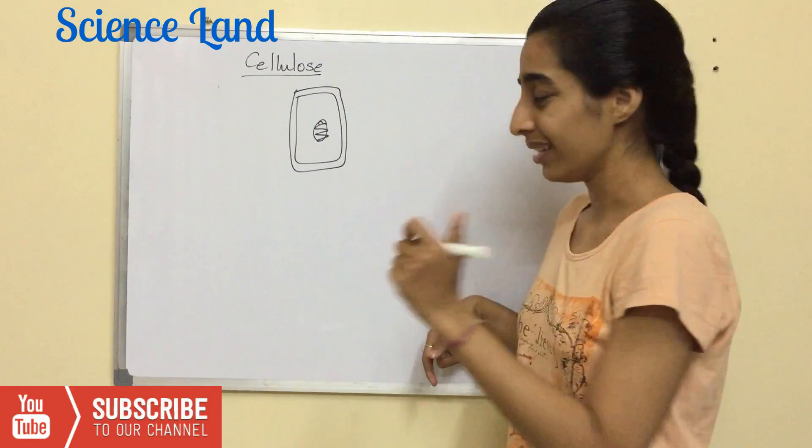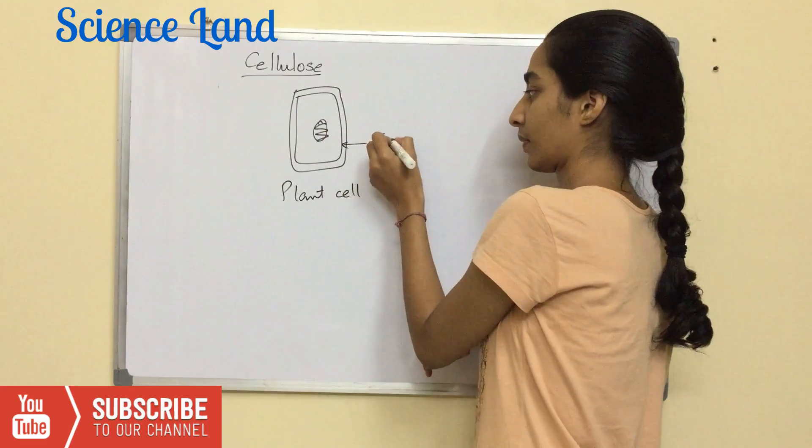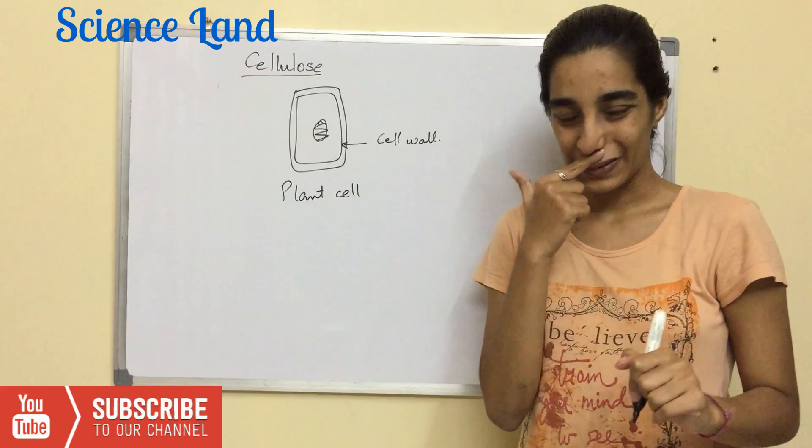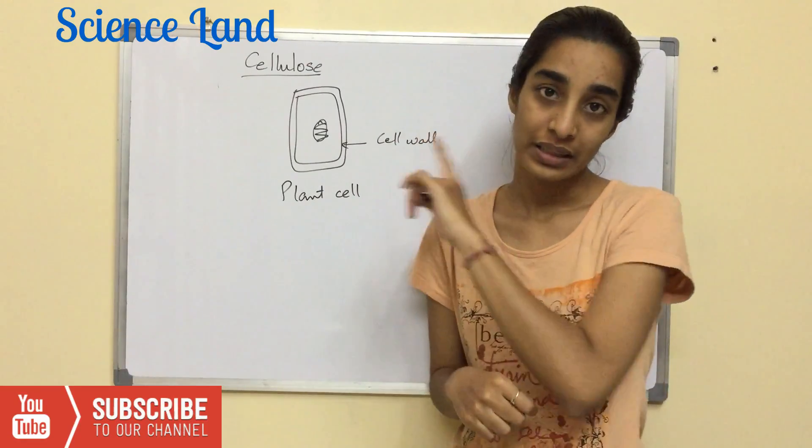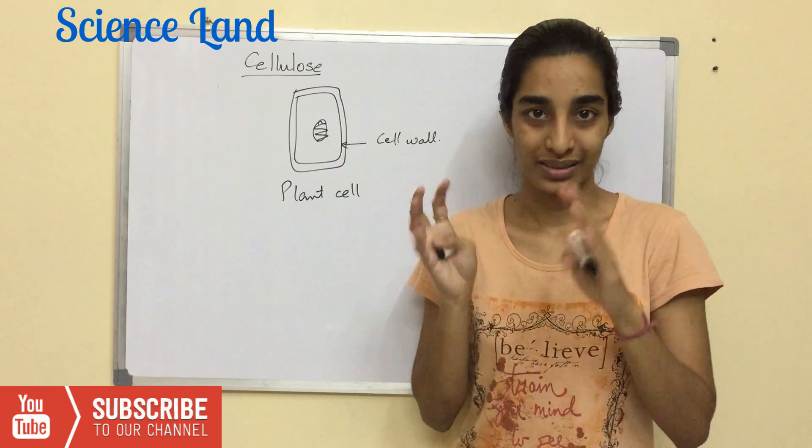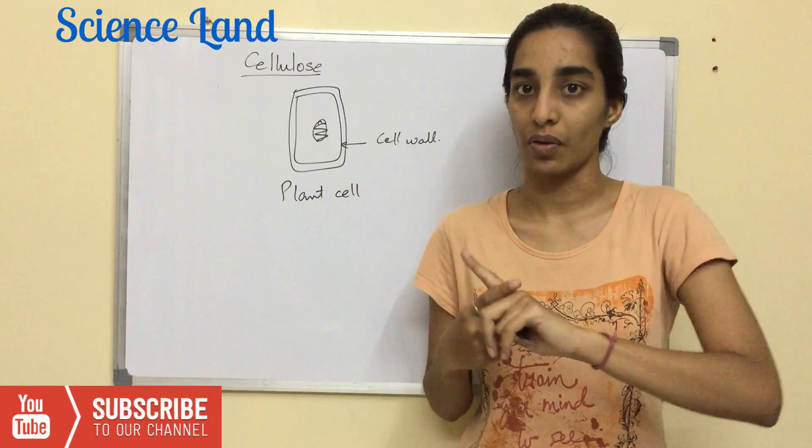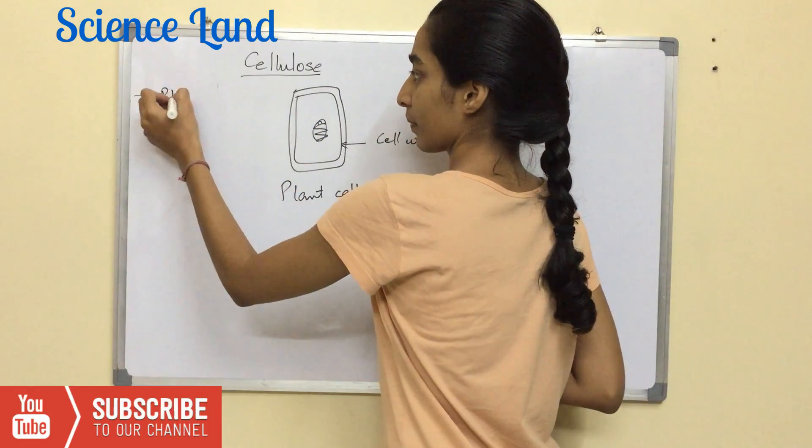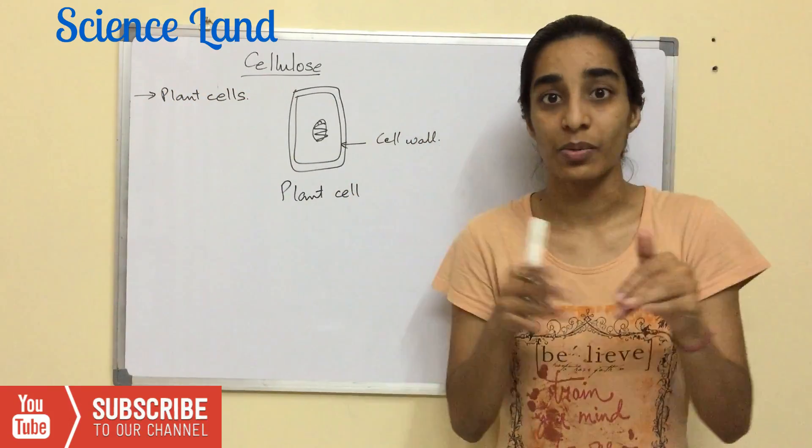This is my plant cell. This is its cell wall. So the plant cell wall contains a structural component which is known as cellulose. There are lots of other polysaccharides along with cellulose in the cell wall matrix itself, but cellulose is the most important of all of these. So cellulose is present in plant cells.